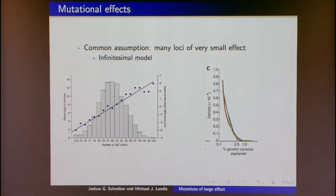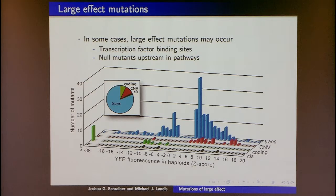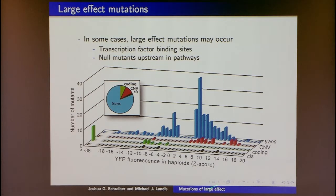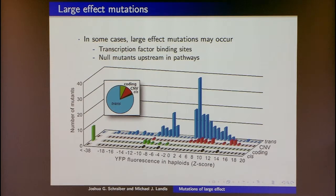But there are cases where you might expect large-effect mutations. This figure from Tricia Witkopp's group labeled a yeast protein with yellow fluorescent protein, made many mutations, and asked how much expression level changed. For various classes of mutations they got very large effects — for example, some reducing normalized expression by minus 38 units. It's reasonable to expect large-effect mutations by disrupting a transcription factor binding site or getting a null mutation in an upstream pathway.